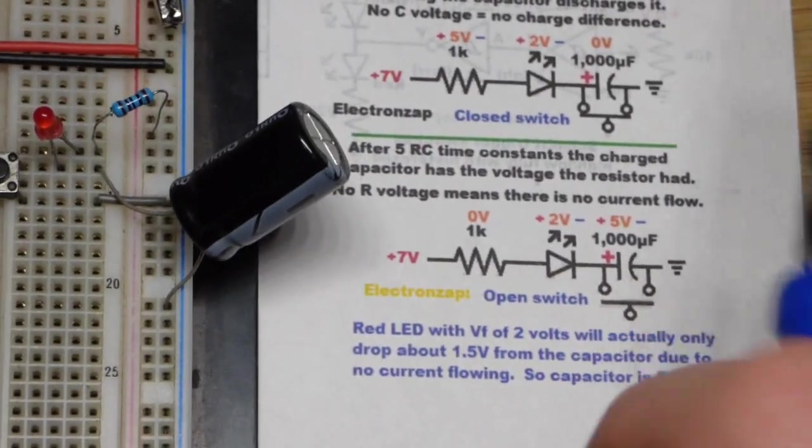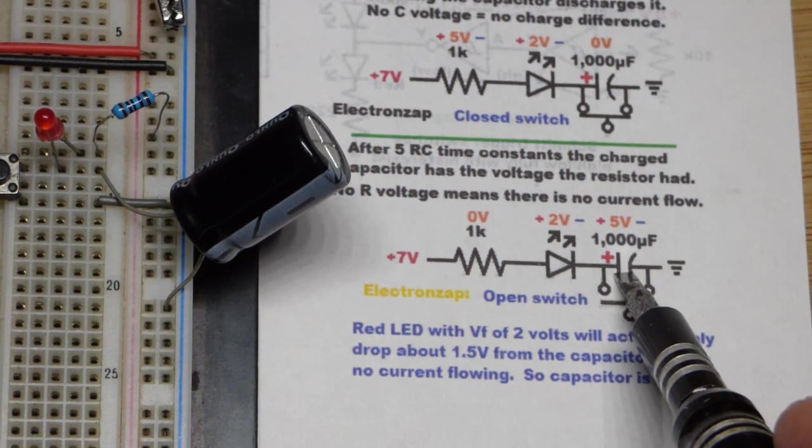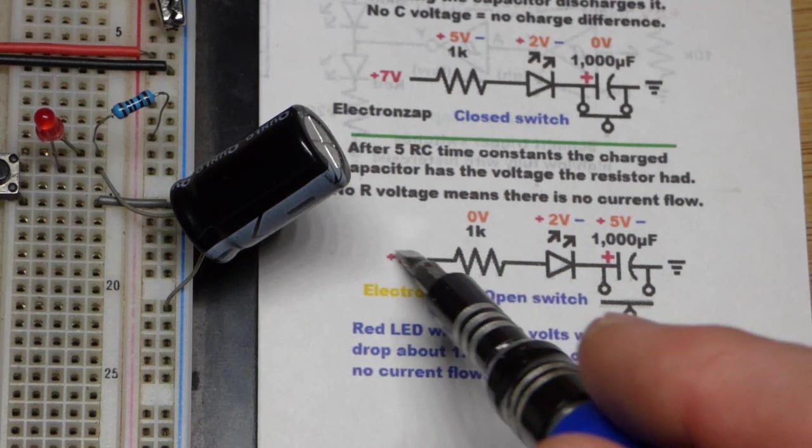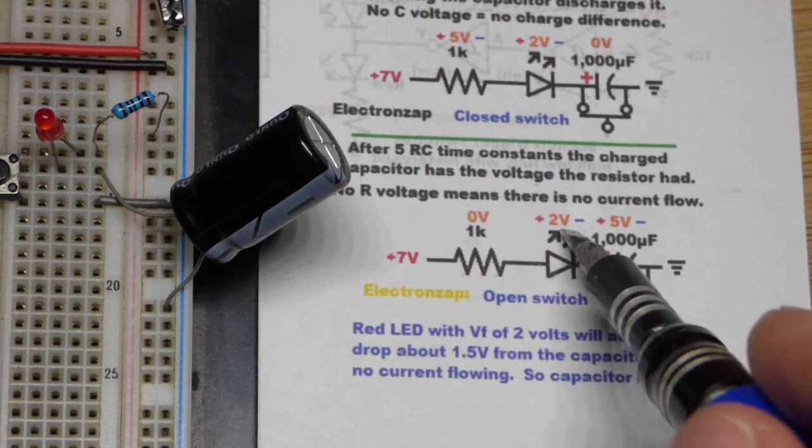Now when you release the switch, the capacitor is going to start charging to 5 volts. It's charging through the LED and the resistor. Current is going through. And actually as current goes down,